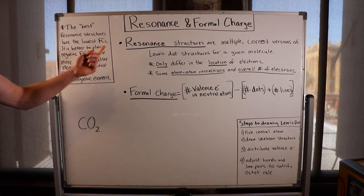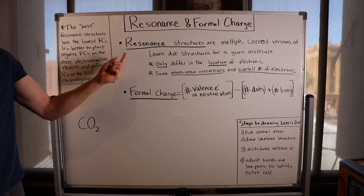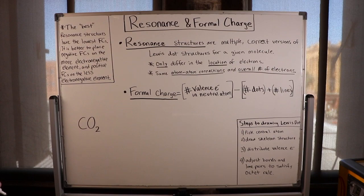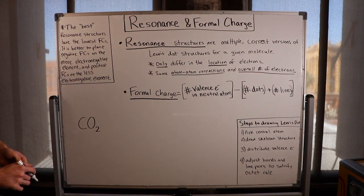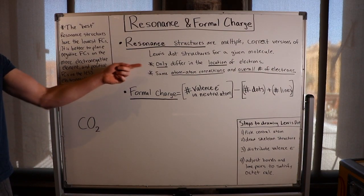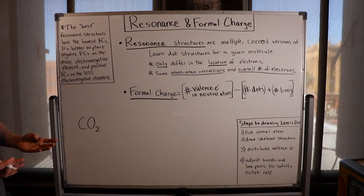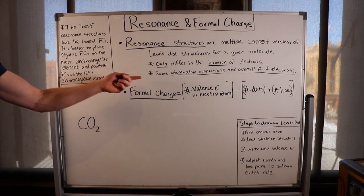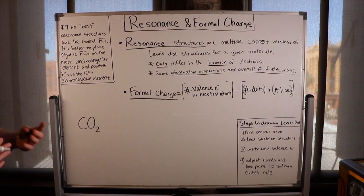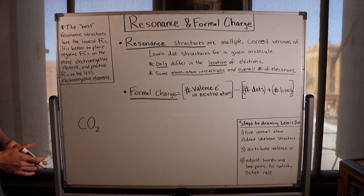The definition of a resonant structure is that there are multiple correct versions of Lewis dot structures for a given molecule. They only differ in the location of the electrons — that's very important. But they have the same atom-to-atom connections and the same overall number of electrons.